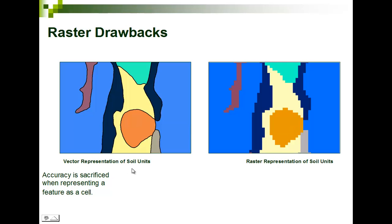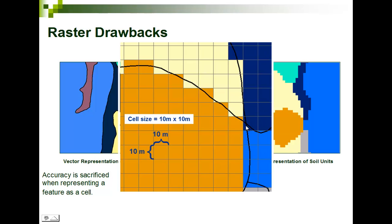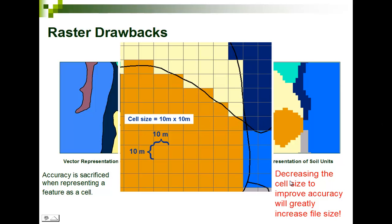These are soil units here — what we call discrete data as opposed to continuous data. As we zoom in and decrease the cell size, it improves accuracy but increases file size. If we go from 10x10 meters to 1x1 meter, we increase the number of pixels by 100, which increases processing time and file sizes. Just like when you buy a new digital camera — the photos take up more and more space because you have more pixels to store information about.